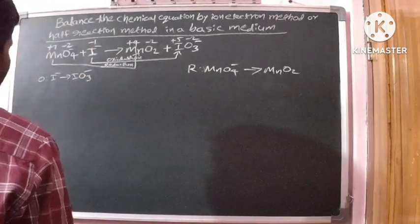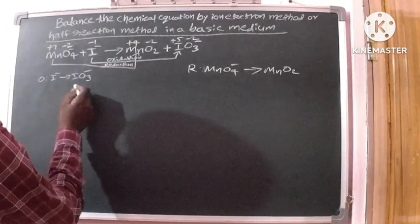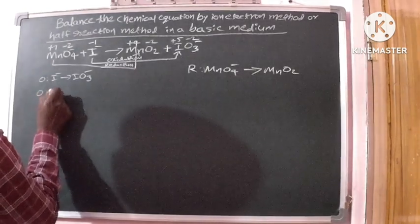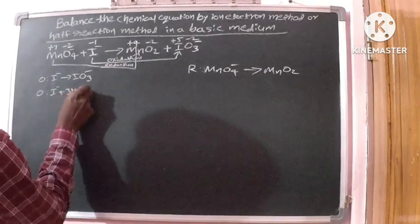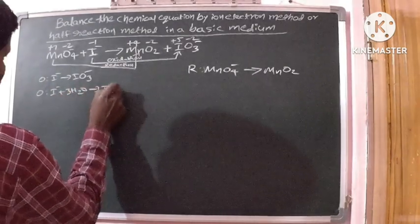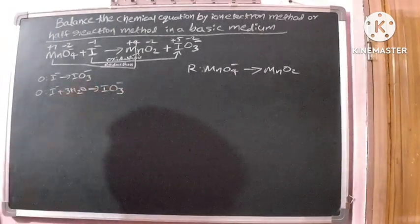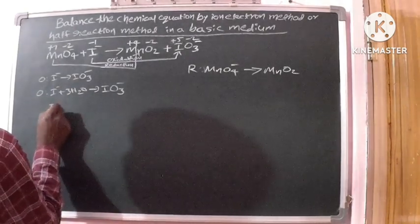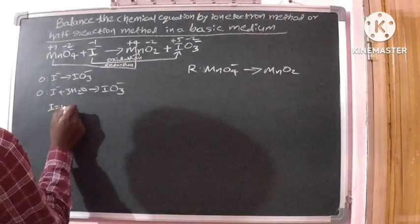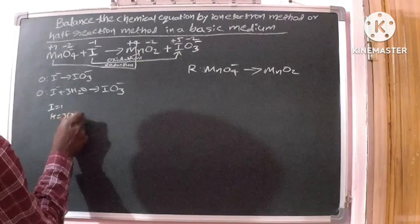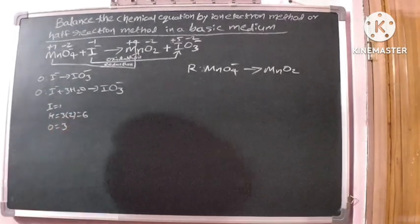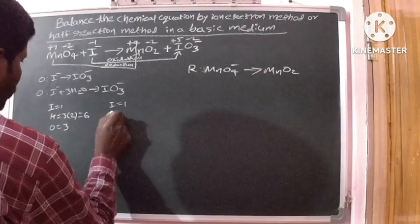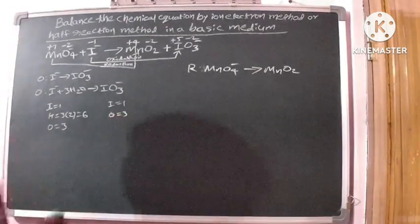Now we can balance the number of atoms in the two half reactions. In the oxidation half reaction, to balance the oxygen atoms, we add water molecules. Since IO3⁻ has three oxygen atoms, we add three water molecules to the left: I⁻ + 3H2O gives IO3⁻. In the reactants side: I=1, H=6, O=3; in the products side: I=1, O=3. The oxygen atoms are now balanced.